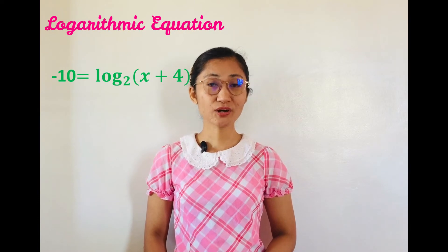On the other hand, a logarithmic equation is an equation with logarithms. One distinguishable characteristic of a logarithmic equation from a logarithmic function is that it involves one variable only. So, examples are negative 10 equals logarithm of x plus 4 to the base 2.